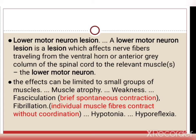In lower motor neuron lesion (neural palsy), which affects nerve fibres travelling from the ventral horn of the spinal cord to the relevant muscle, there is muscle atrophy (the size and strength of muscle decreases), fasciculations (spontaneous contractions), fibrillation (individual muscle fibres contract without coordination), hypotonia and hyporeflexia.